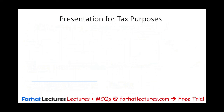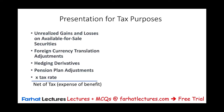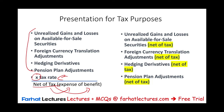Now let's talk about presentation for tax purposes. You can present those items all together, multiply them by the tax rate, and show them net of tax — whether that's a tax expense if there is overall income, or a tax benefit if there is overall a loss. We would do that if they all have the same tax rate, though that's not usually the case. Alternatively, we can show each item separately, net of tax — computing the tax effect individually: a gain generates a tax expense, and a loss generates a tax benefit.